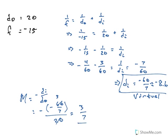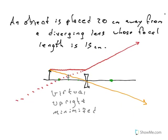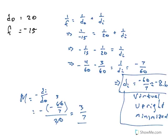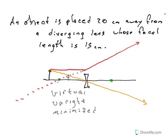The magnification is positive 3 over 7, so it's upright since the sign is positive. The number itself, 3 over 7, is less than 1, so it's minimized. Comparing to the graphical method: virtual image on the left, upright with the arrow pointing upwards, and minimized with a smaller arrow. The image distance is about 8.5 centimeters on the left. Looking at the picture, the focal point is at 15, and the image is a little more than halfway there — 8 is a little more than halfway. The analytical results look good.